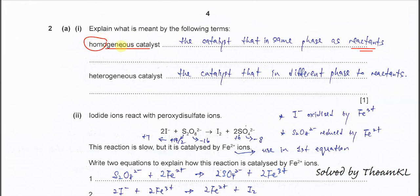Following the same logic, a heterogeneous catalyst is the catalyst that is in a different phase to the reactants. For example, when the reactants are in aqueous or gas form and the catalyst is in solid form, we know that this catalyst is a heterogeneous catalyst.